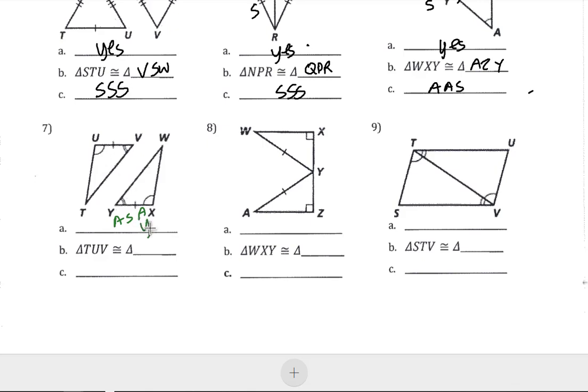For number 7, we have an angle-side-angle pattern, so they're congruent. Angle T goes with angle W, and so we have WXY. Again, that's angle-side-angle.